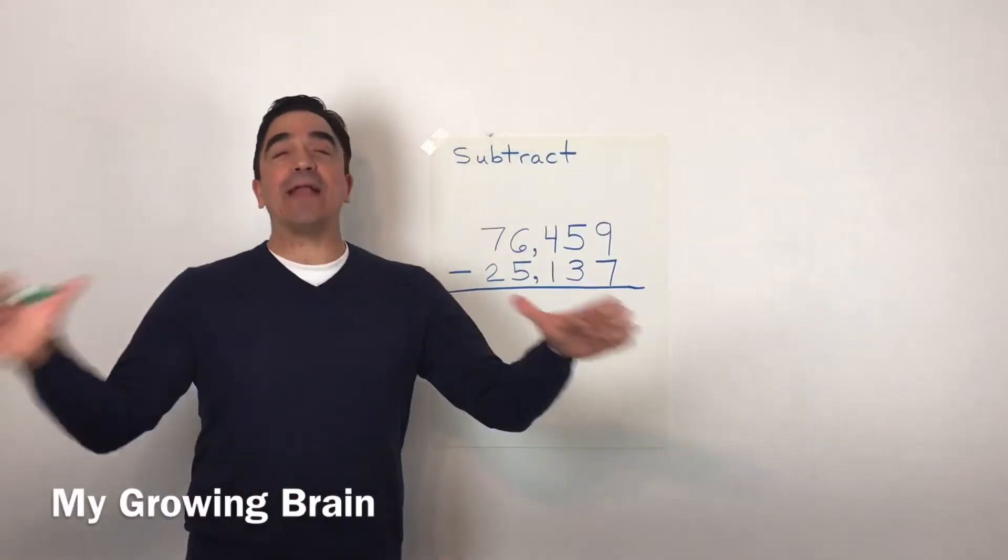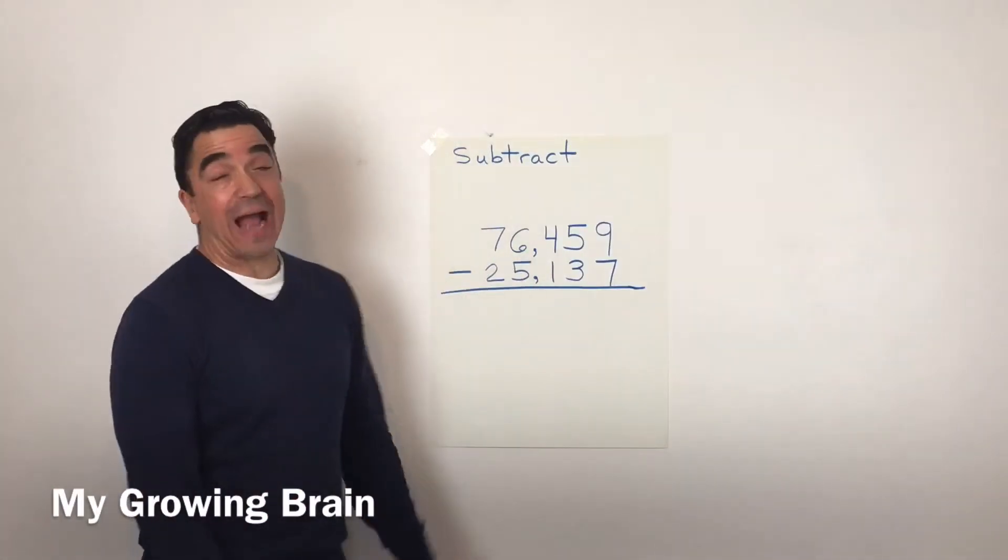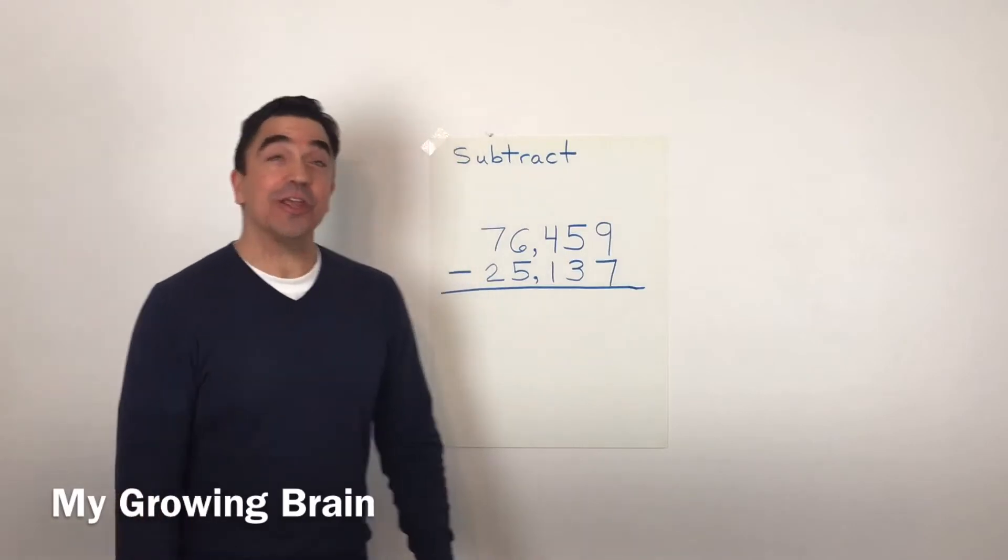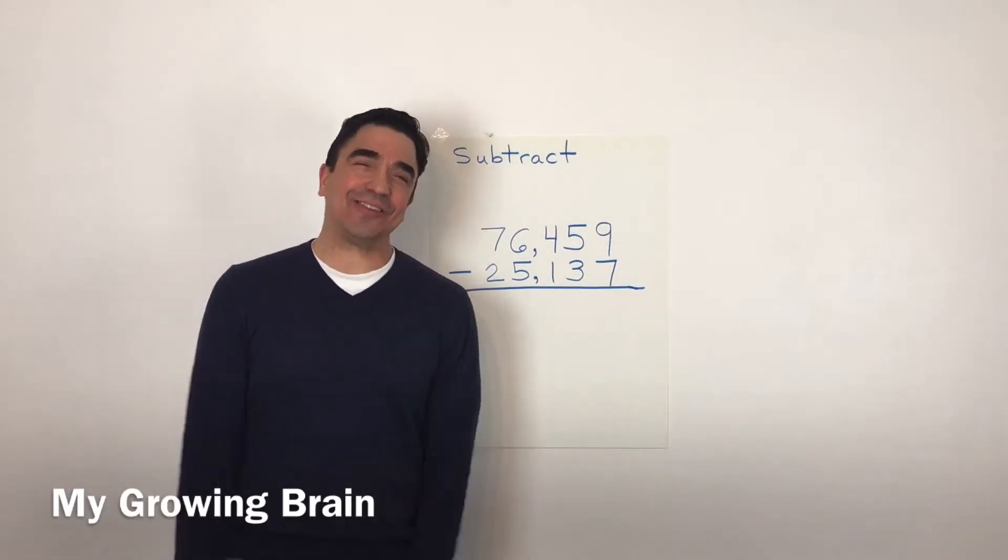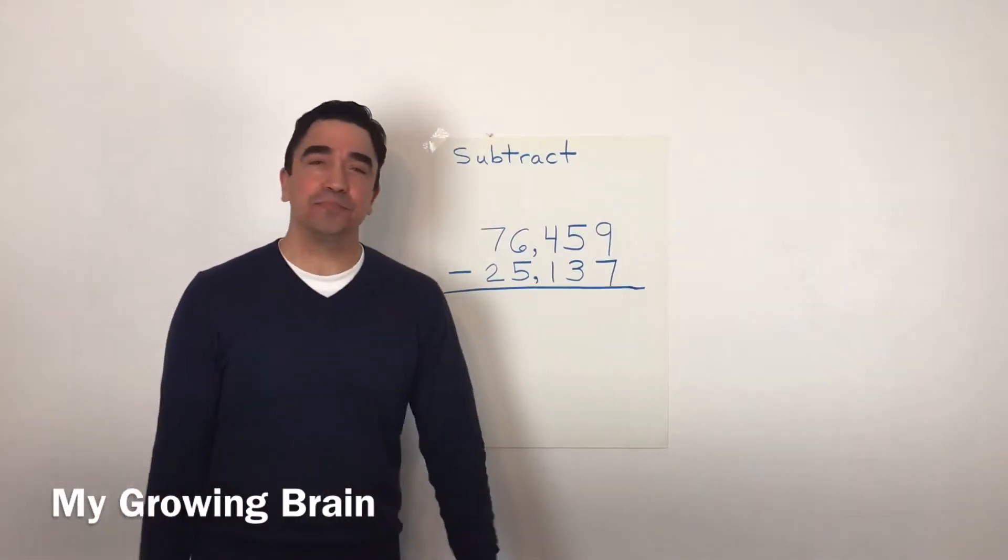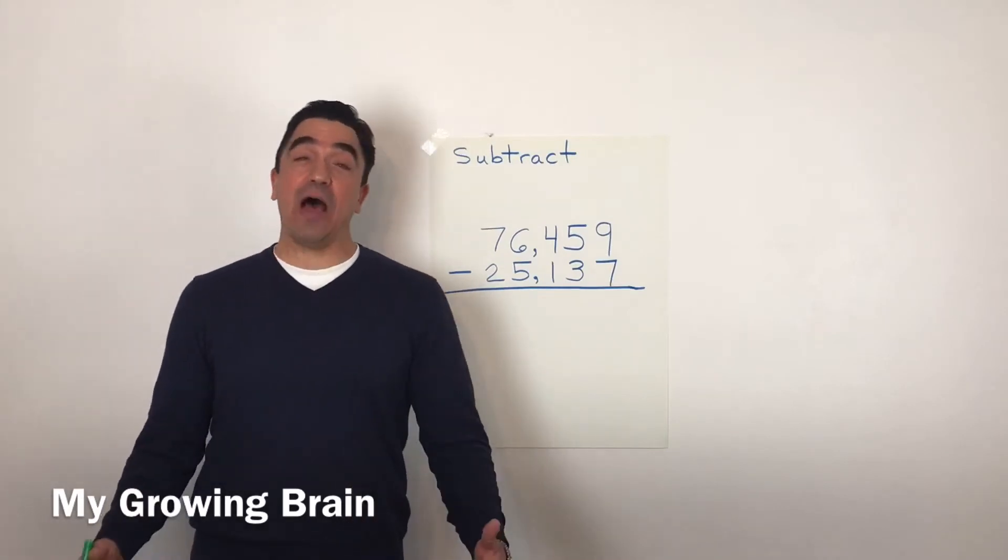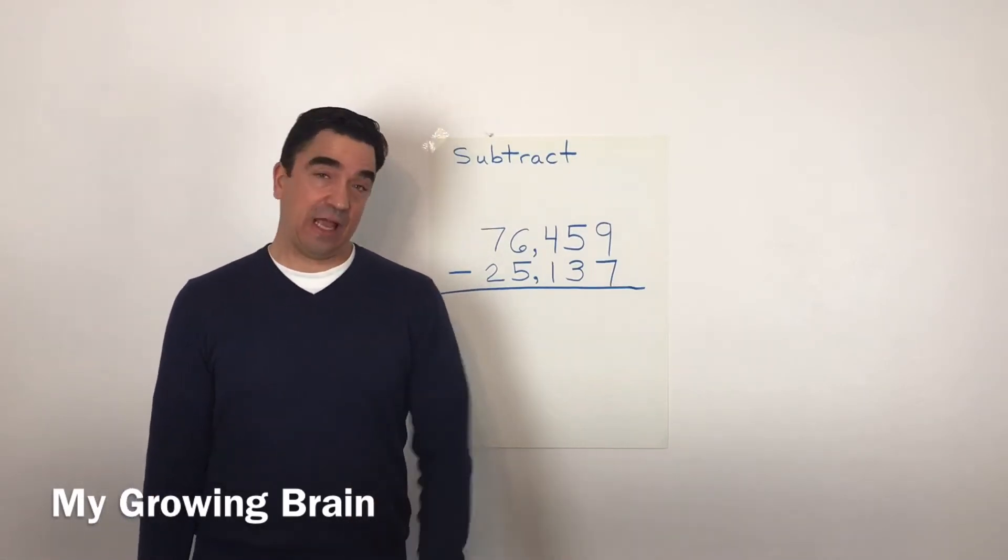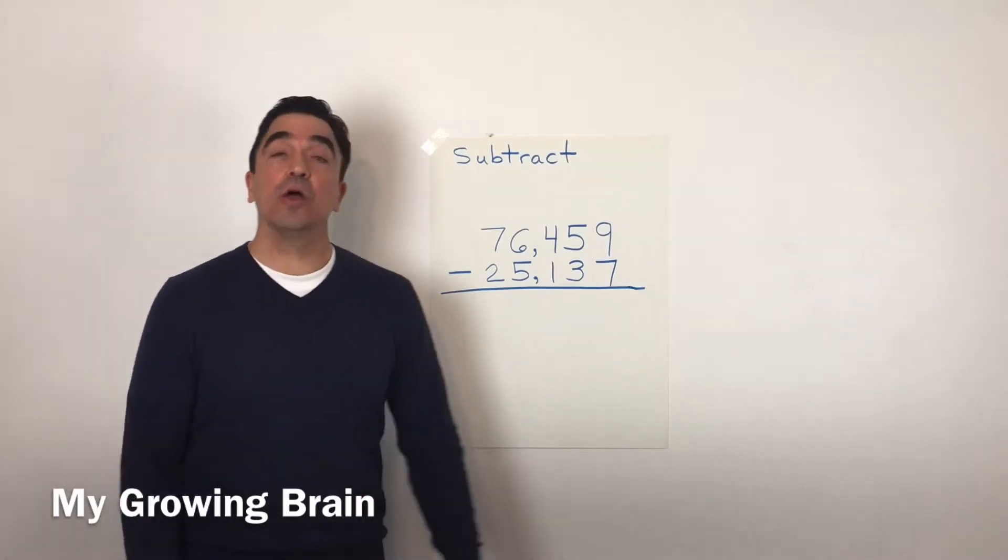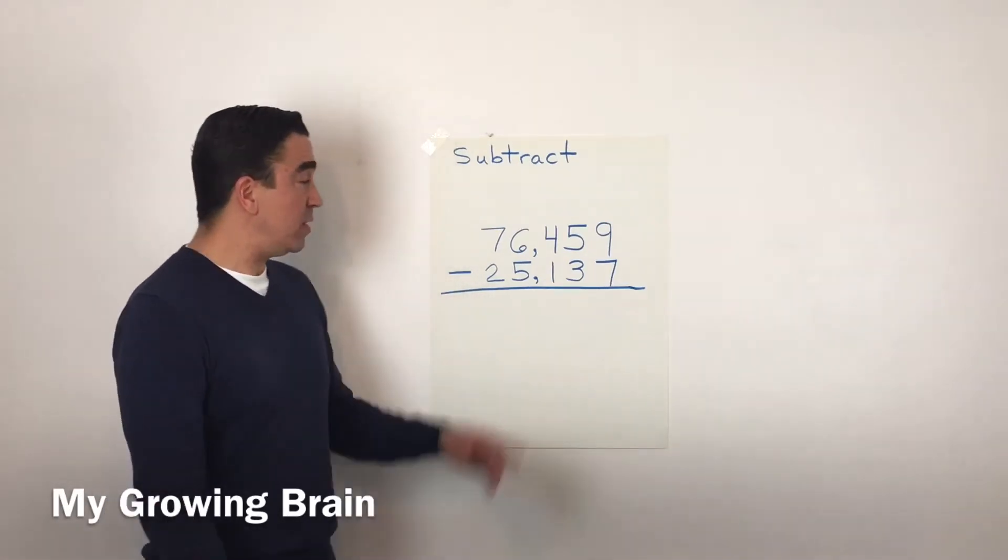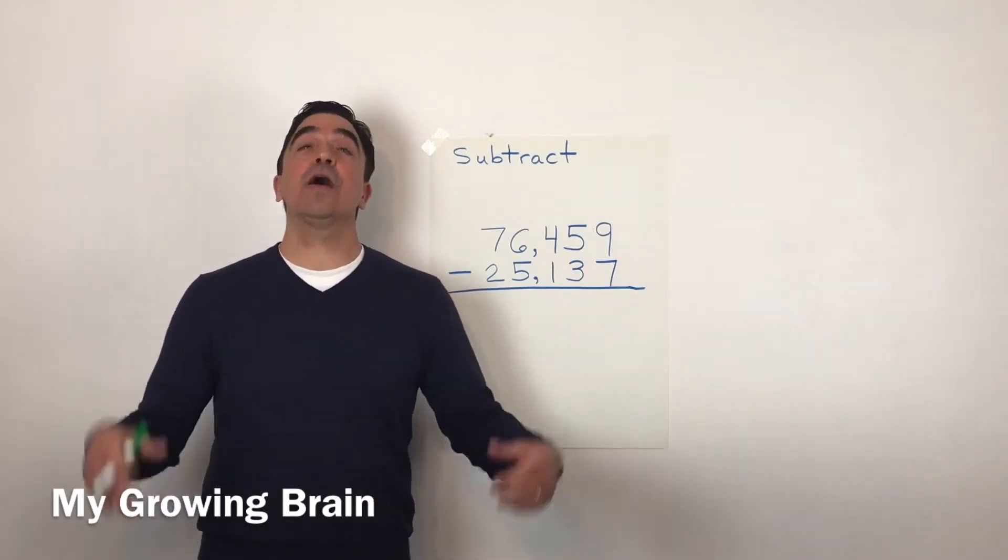Hi there, Coach Mike, and today's lesson is on subtracting five-digit numbers. Let's get started. Here's our problem: 76,459 minus 25,137.